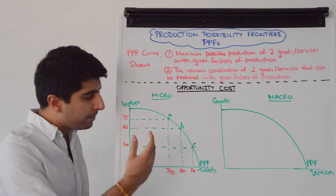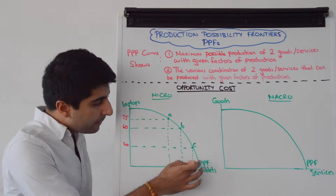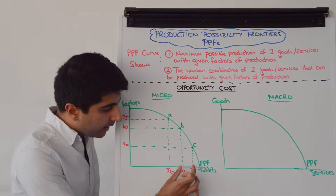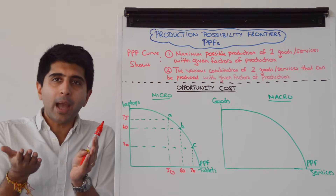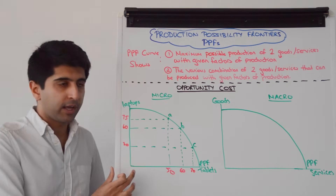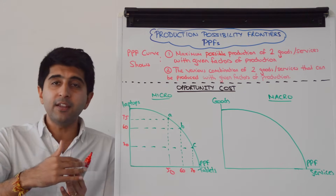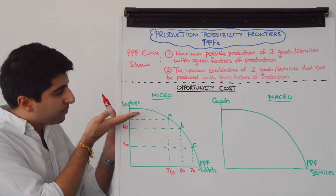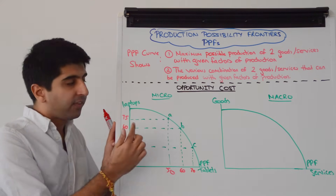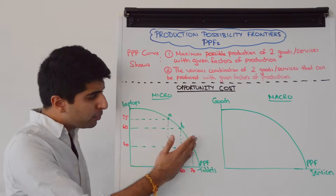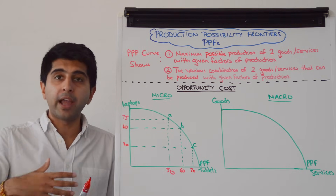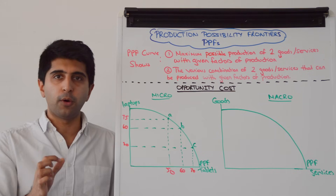What does this actually mean? At a micro level, as a business moves towards heavy specialisation in tablets, their factors of production are actually more suitable towards laptop production. Because they're increasing tablet output by the same amount but giving up more and more laptops, that means their factors down on the curve are much more suited to laptops. Further along the other way, factors are more suited to tablets. That's why we see the concave shape and the law of increasing opportunity cost.